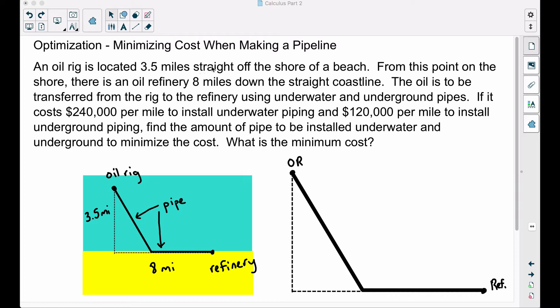We have an oil rig three and a half miles straight off the shore of a beach. From this point on the shore, there is an oil refinery eight miles down the straight coastline. The oil is to be transferred from the rig to the refinery using underwater and underground pipes. If it costs $240,000 per mile to install underwater piping and $120,000 per mile to install underground piping, find the amount of pipe to be installed underwater and underground to minimize the cost. And what is this minimum cost?